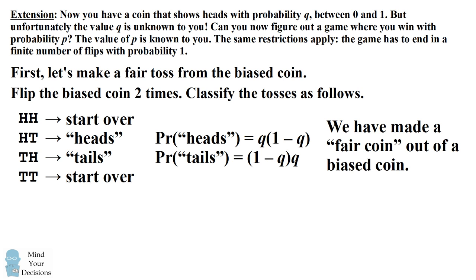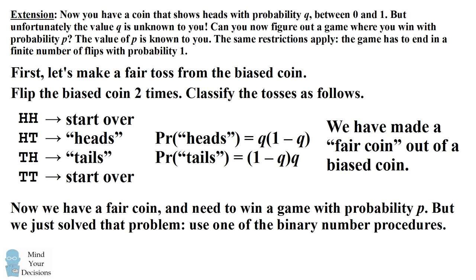So now the problem reduces to: what do we do if we have a fair coin and we need to win the game with probability P? Well, we've just solved that problem. We can use one of the binary number procedures that have just been described and we can get to a game which we win with probability P. It's an absolutely stunning result. We can simulate any probability P that we want — rational or irrational — from a coin. And it can be a biased coin where we don't even know the bias.